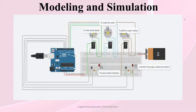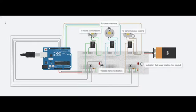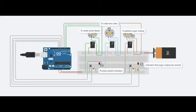Modeling and simulation of the Darwad Peda making machine. The simulation includes an Arduino, a breadboard, three motors, a battery, two buttons, and wires for the required connections. Motor one rotates the screw feeder, motor two rotates the cutter, and motor three performs the sugar coating function. Motor one and motor two are controlled by button one, and motor three is controlled by button two.